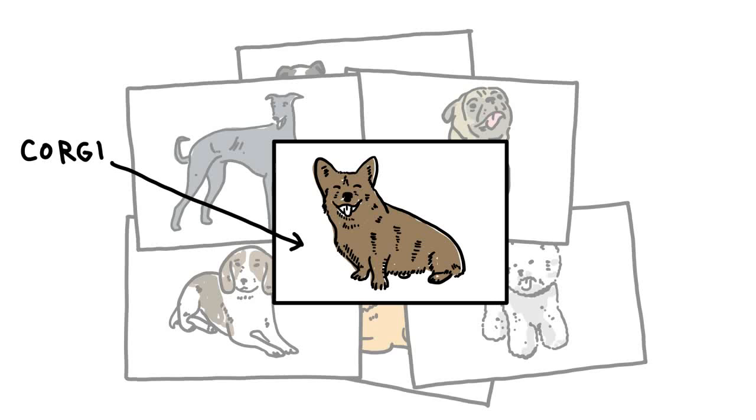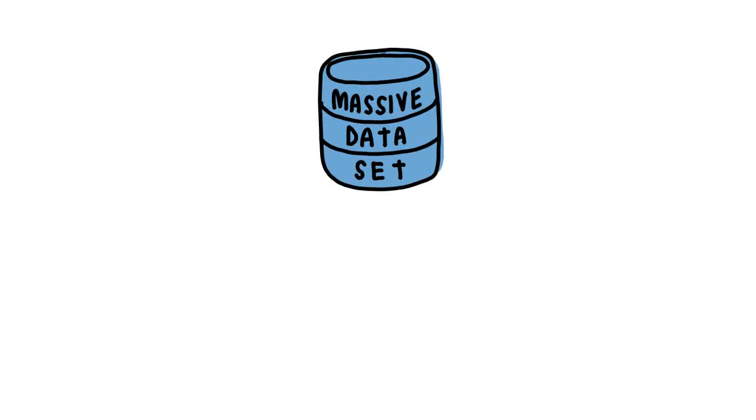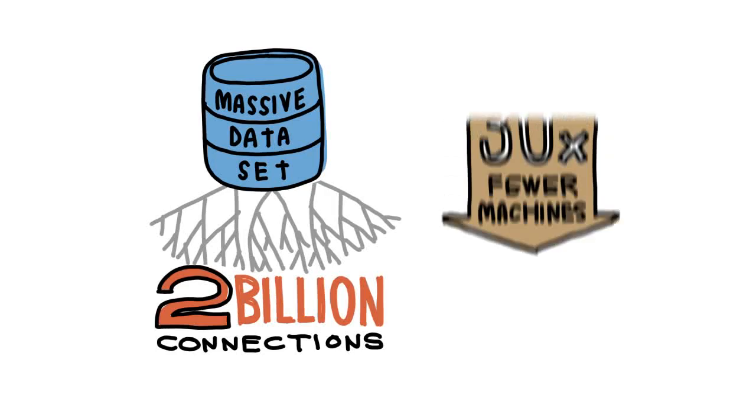To do this, we took the largest data set we could find and framed a massive neural network with over 2 billion connections, using 30 times fewer machines, and developed an image classifier that produces double the accuracy of other systems in the industry.